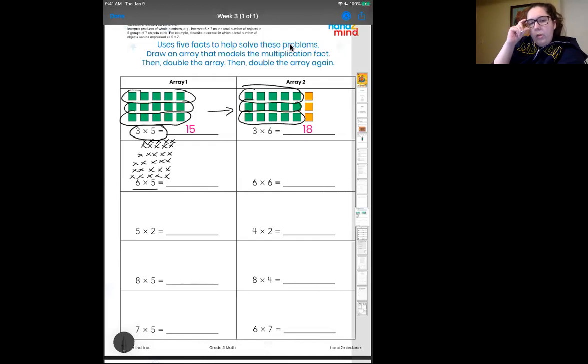So using this array, I can solve this problem. So I can count by fives because there's five in each group. So five, 10, 15, 20, 25, 30.